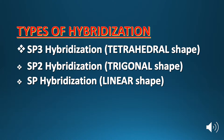Second is sp2 hybridization. In sp2 hybridization, three electron pairs are attached around the central atom, and the molecular geometry or shape is trigonal planar.